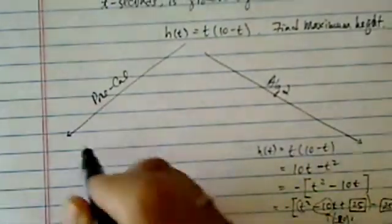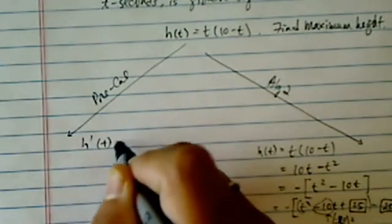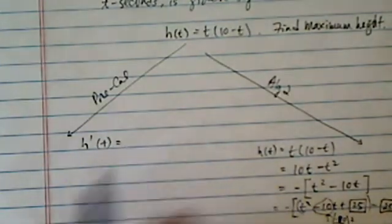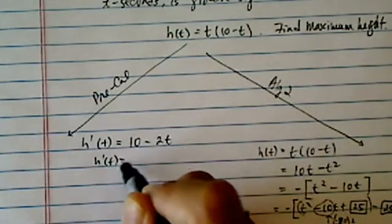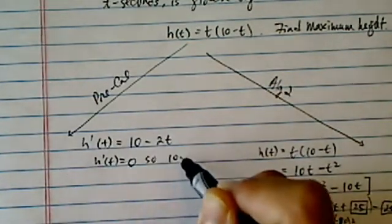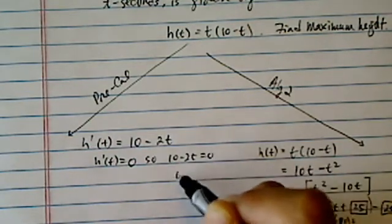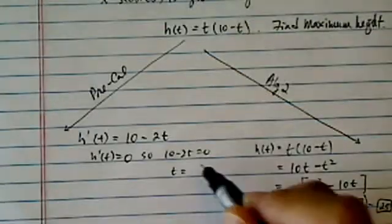Now, if you have taken calculus, taken derivative of the height, you have, let's see, what do we have, 10 minus 2t, setting derivative equal to 0, so 10 minus 2t equal to 0, that gives me t is equal to 5.